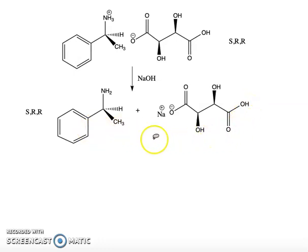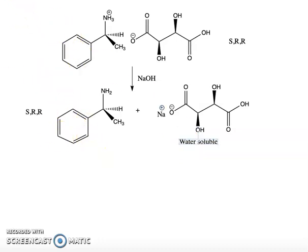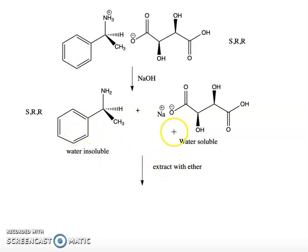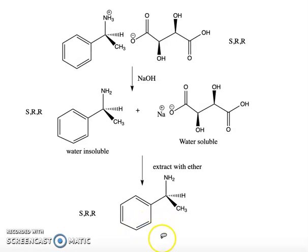We're going to separate these two based on their solubilities. The sodium tartrate salt is ionic — it has positive and negative charges — so it's water soluble. The neutral organic amine compound is water insoluble. So we're going to extract this mixture by adding water and extracting with ether. The neutral amine ends up in the ether phase, and the sodium tartrate salt ends up in the water phase, effectively separating the two. After that, we do a distillation and then determine the optical purity by measuring the optical rotation.